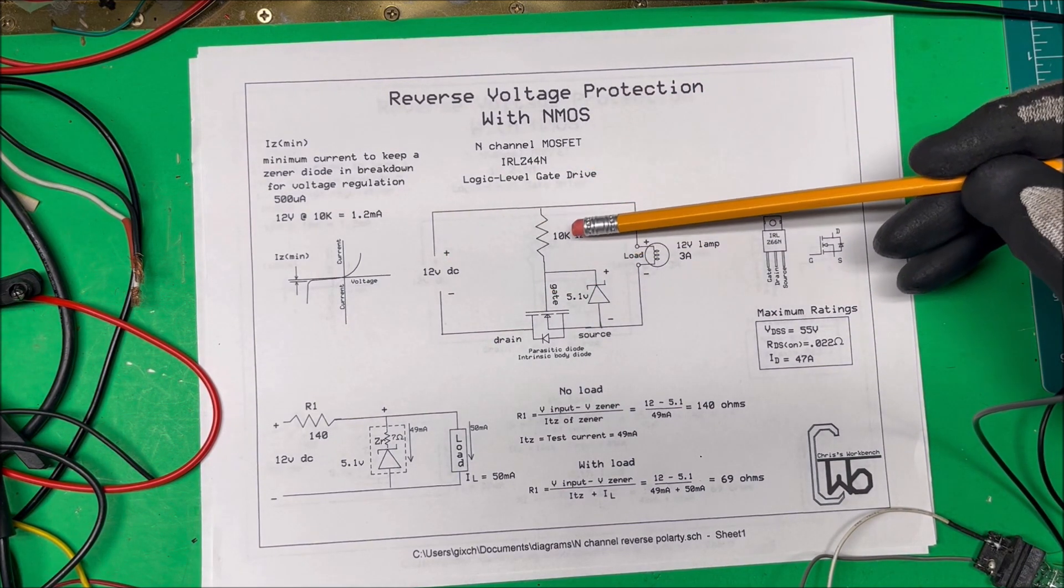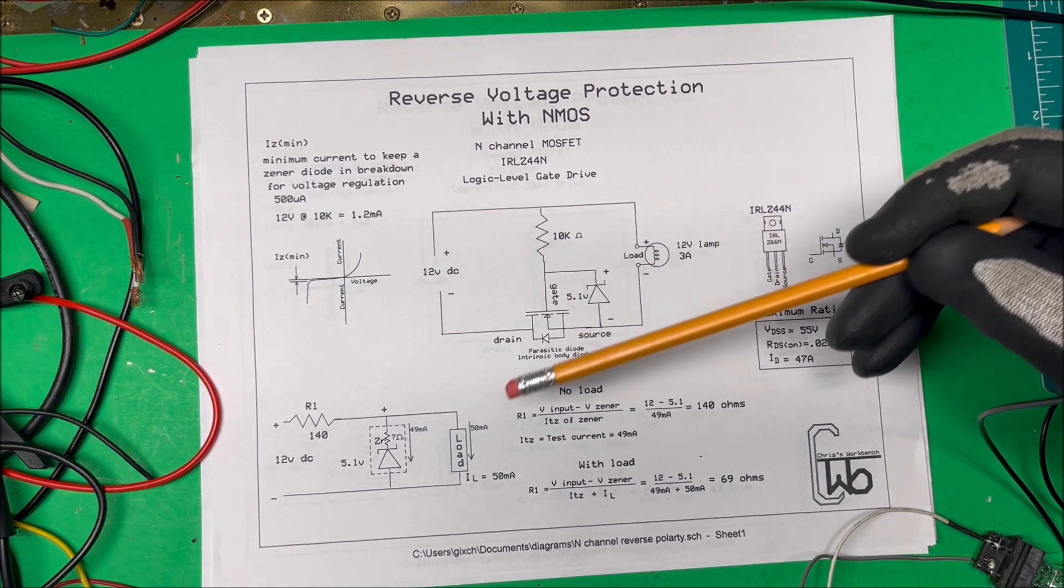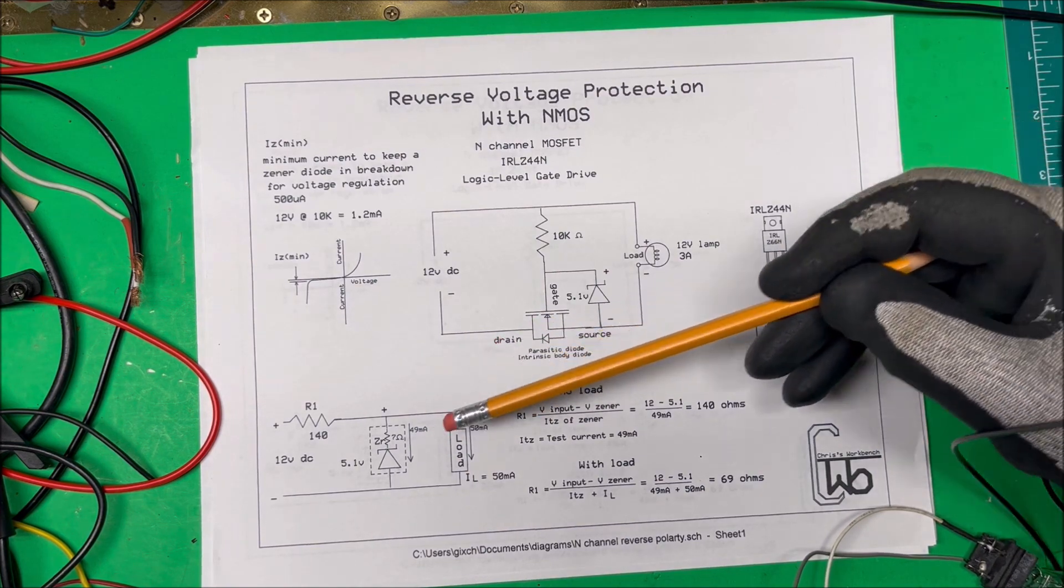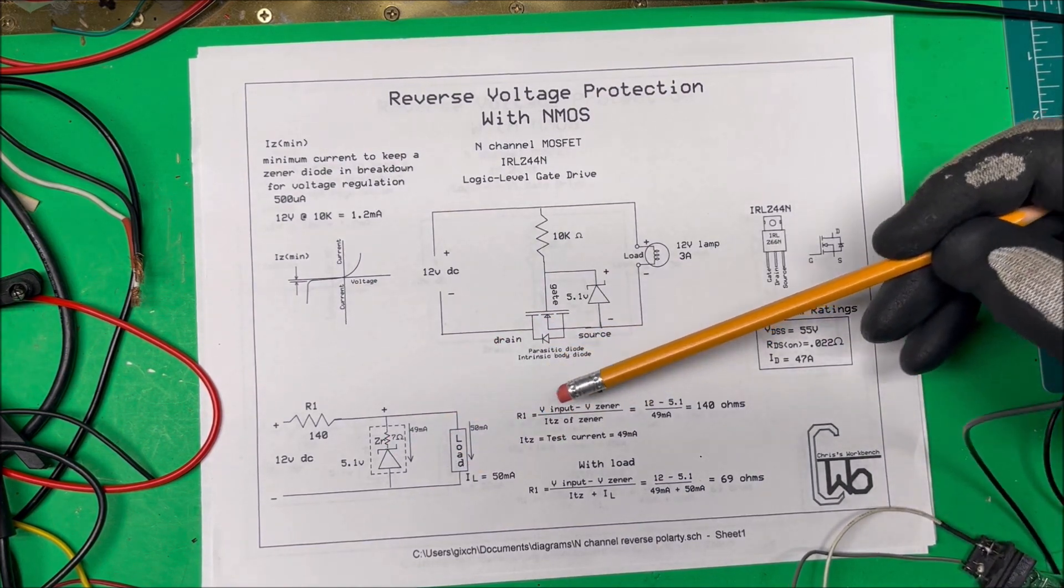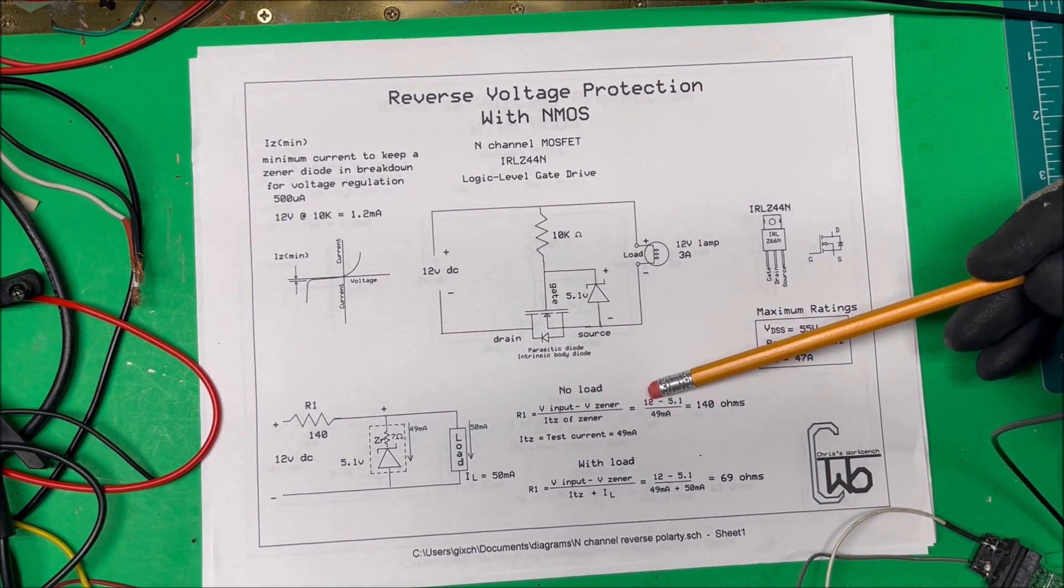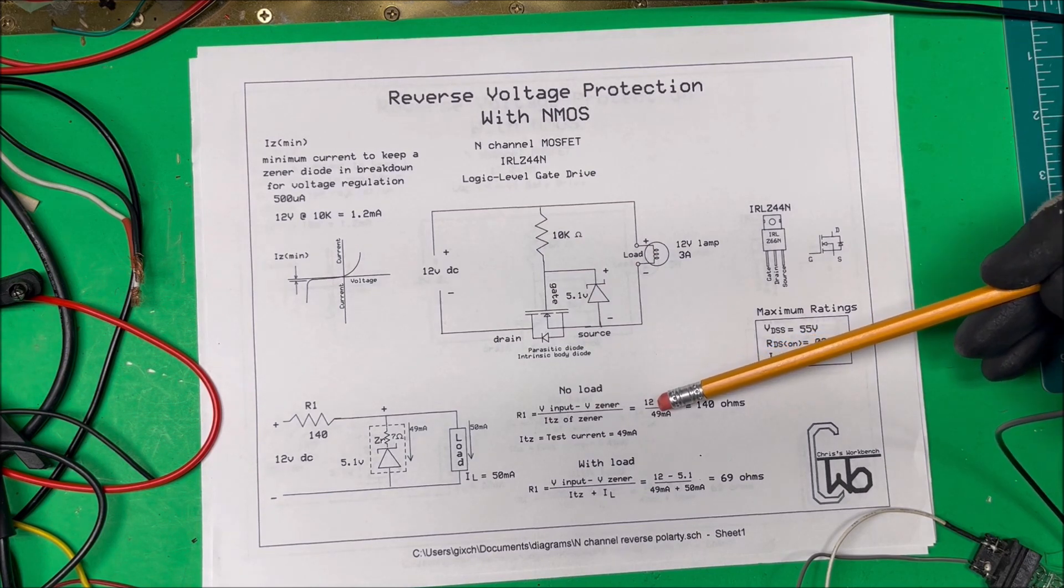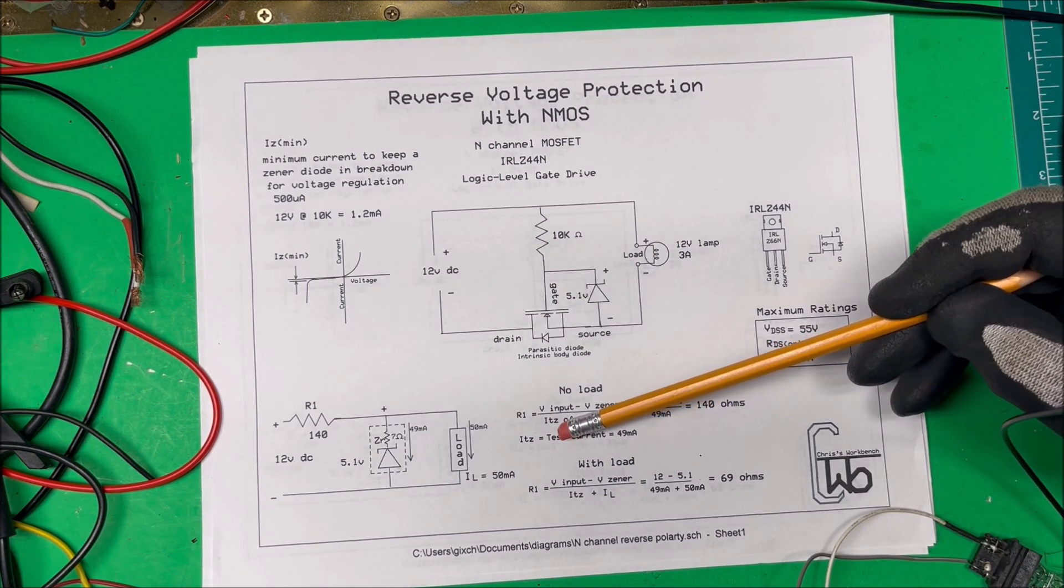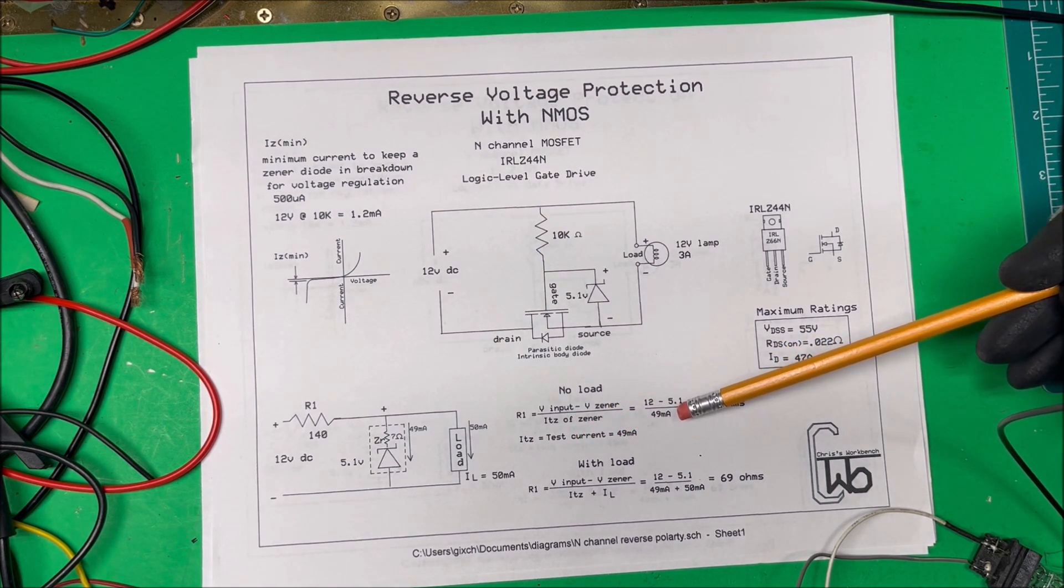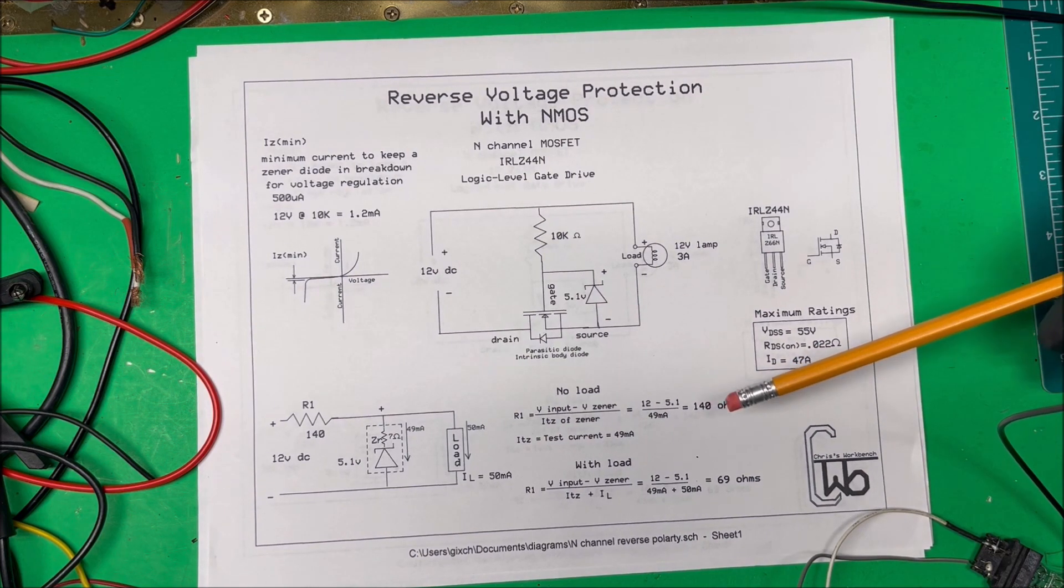So on both of them we use 10k ohms here. Now how do we get by with 10k? We had talked about Zener voltage regulation and when we do that we usually use this formula here. We'll take the input voltage minus the Zener voltage. So in this case it's 12 volts and 5.1 volts that's going to be 6.9 and then we divide that by our ITZ or our test current from the data sheet. So in this case it was 49 milliamps and it comes out to 140 ohms.